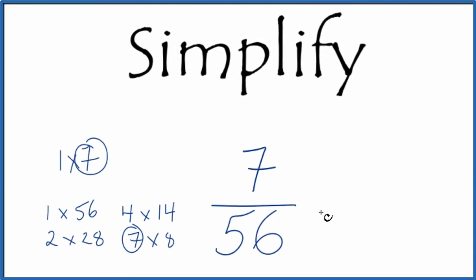So we divide the numerator by 7. 7 divided by 7, that gives us 1. And then 56 divided by 7, that gives us 8.